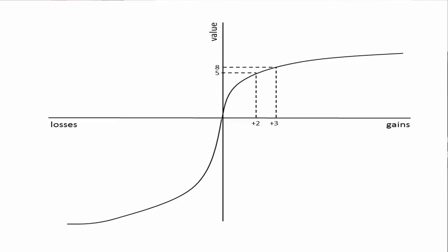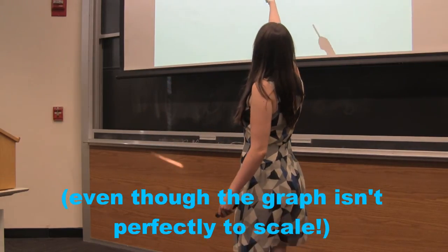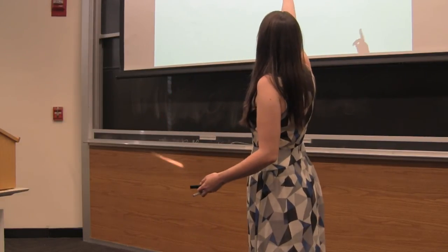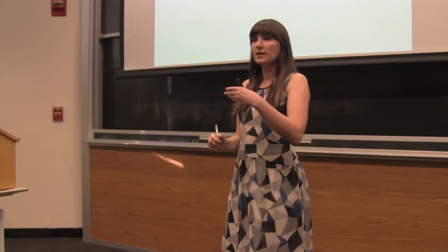And we can see more generally that, without even drawing this out, we could say if this is going to be consistent with something that's concave down, we would expect the value numbers to get closer together as our gains become larger, right? Just because we see our curve flattening out, and that's just another way of saying that marginal value or the extra value that we get from one more unit of gain is decreasing as we go further out in the gains spectrum.